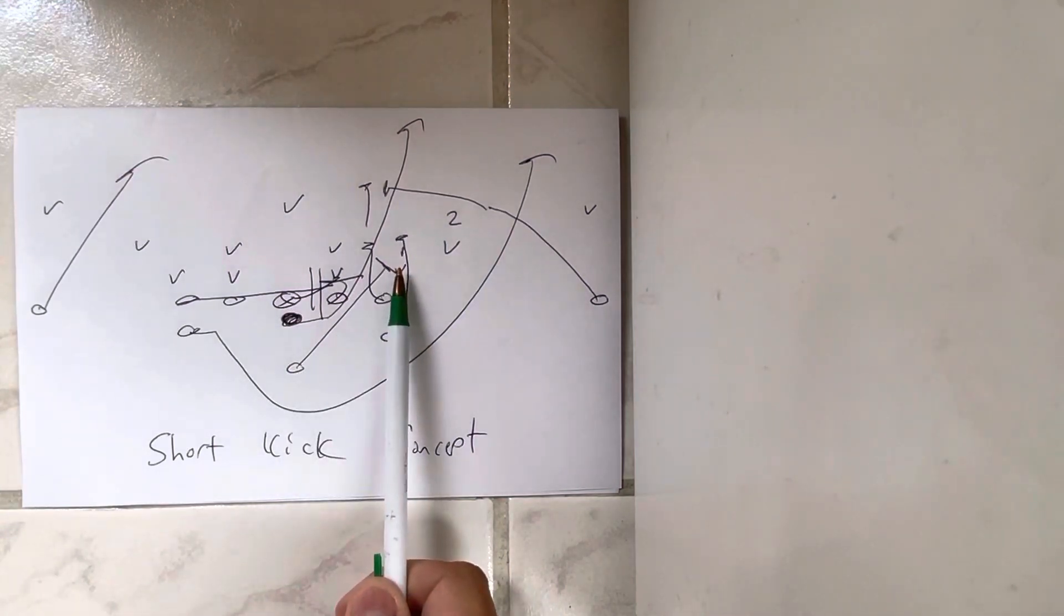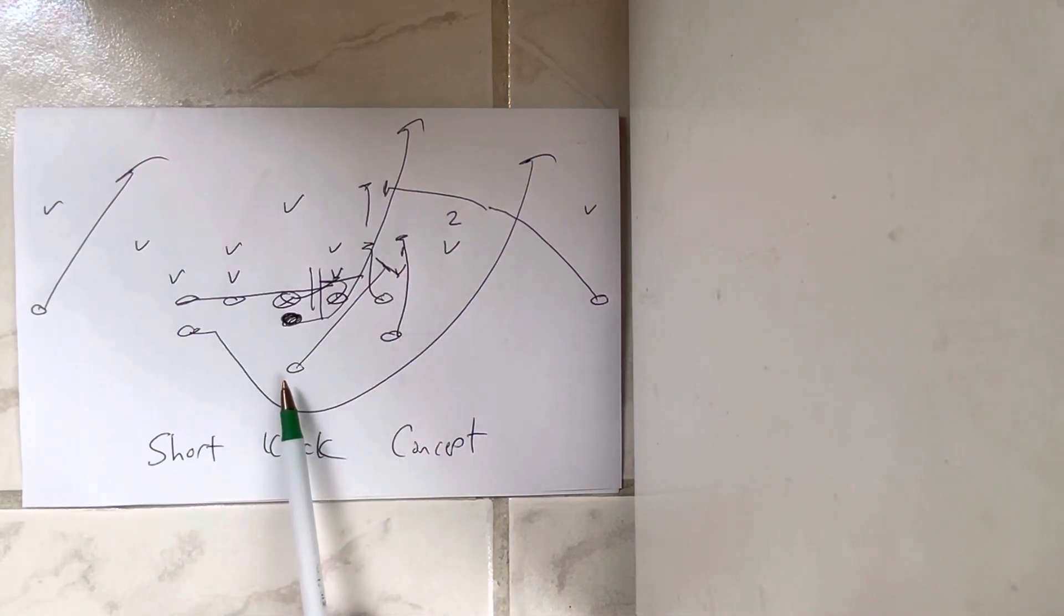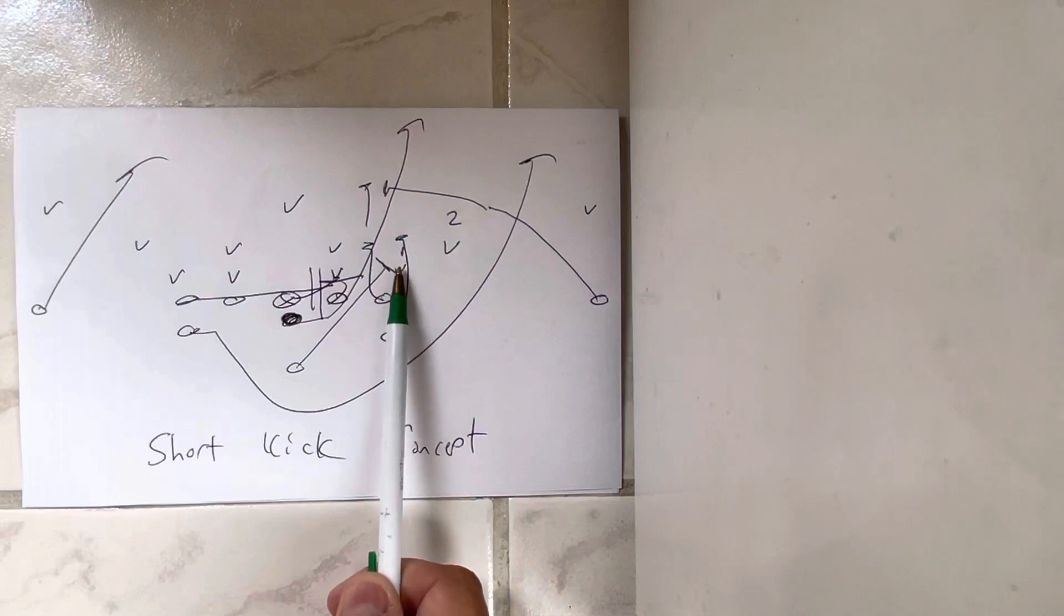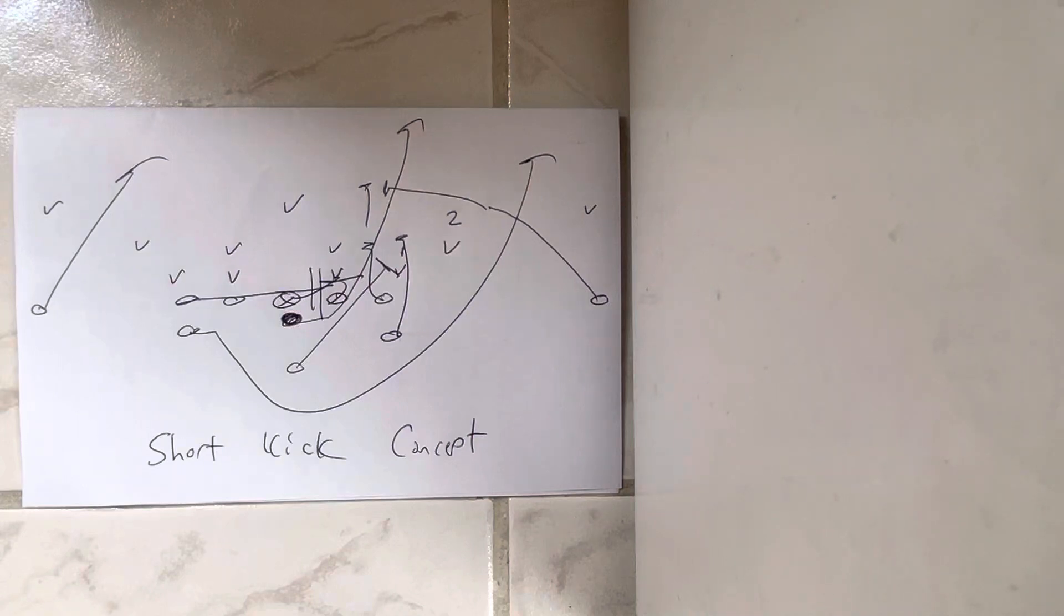What they did is they had the B-back kick number one. So what he would do is he would run his path like he does on triple, but then he'd get his helmet to the left, right for him through number one, trap him, drive him out of bounds. Obviously they want to do this when number one's taking the quarterback on triple.